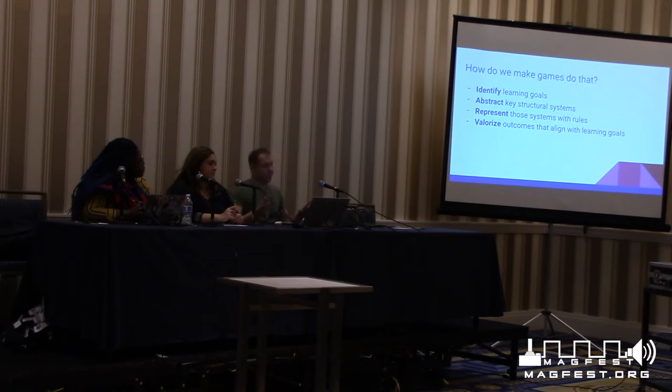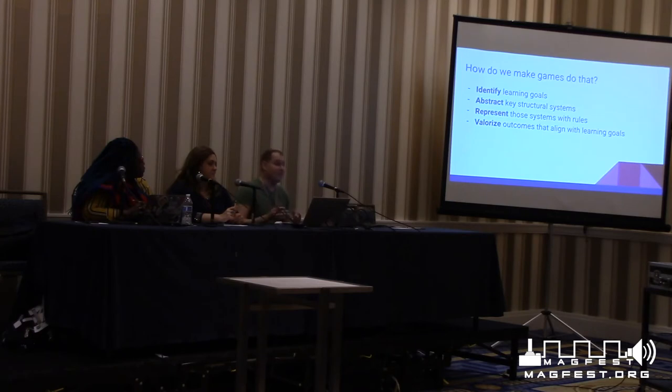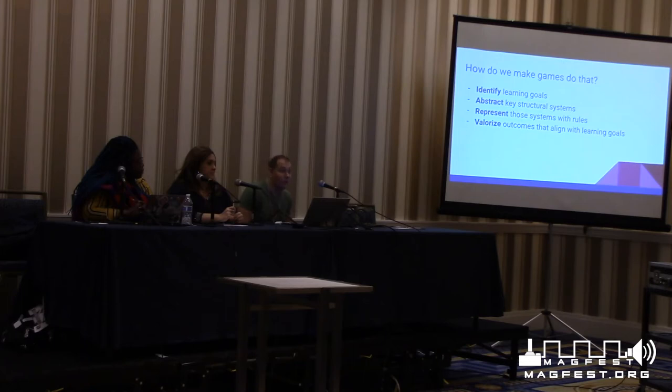So how do we make a game that does those things? First, you identify the learning goal you want to happen — something you want students to learn after they've played your game. If you're an educator, these learning goals will often be mandated. Then you abstract key structural systems that are part of those learning goals — things you could represent through a rule structure. Then you represent those systems with rules, and valorize the outcomes that align with your learning goals, so the best strategies in the game align with what you want players to take home.